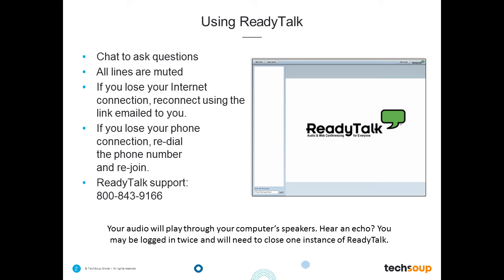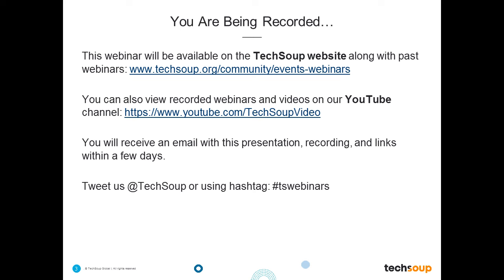If you lose your Internet connection you can reconnect using the link that was emailed to you. If you lose your phone connection you can redial and rejoin at any time. Audio will primarily come through your computer speakers; if you have problems you can call the 855 number being chatted out to you. We are recording this presentation, available on TechSoup's webinar page in a few days, also on our YouTube channel. Attendees will receive a follow-up email with the presentation, the recording, and resource links. You can also tweet us at TechSoup or use hashtag TSWebinars.